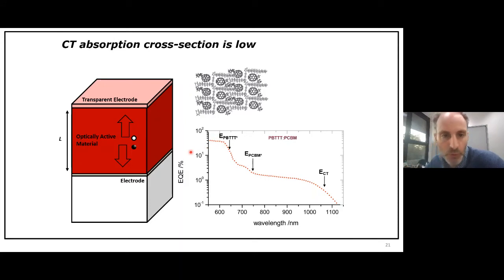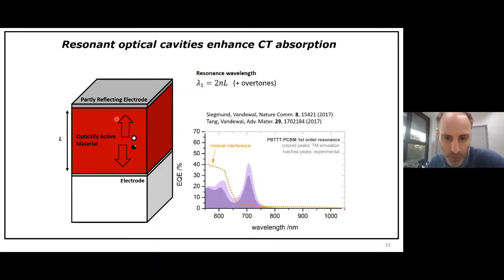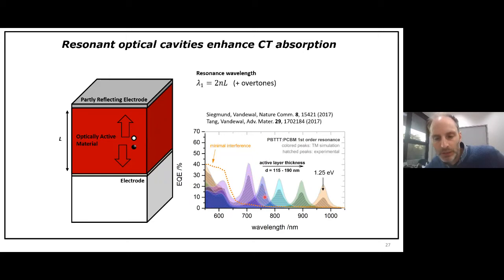So we looked for concepts to increase the CT absorption. One easy way to do this is, instead of using transparent electrodes, is to use partly reflecting electrodes. In that case, light goes into the device and start bouncing in between the two mirrors until it's absorbed, at least roughly. This only happens for certain resonance wavelengths, which are proportional to the thickness of what sandwiched between the two mirrors. So if you do this for PPTT and you replace the ITO with a thin layer of silver, which is partly reflecting, you can get these effects. And then when you tune the thickness,